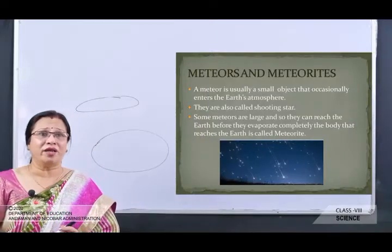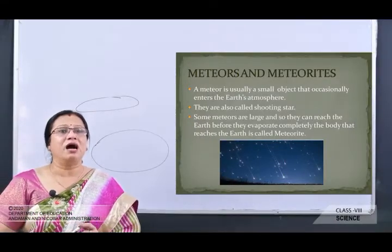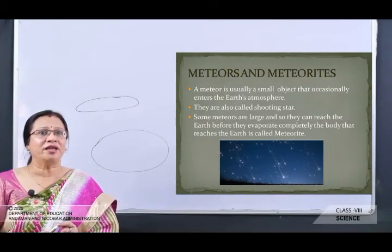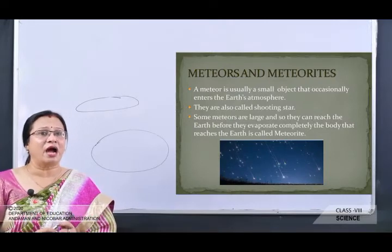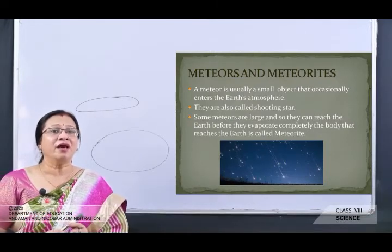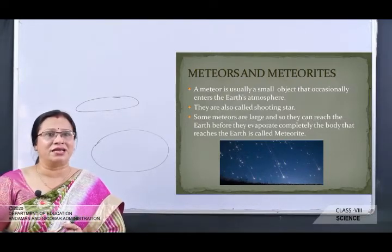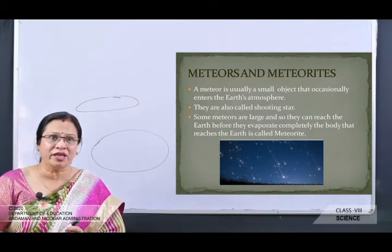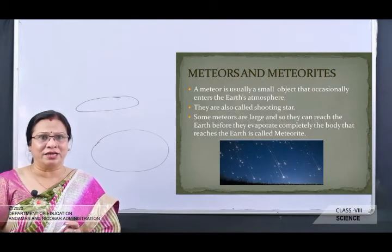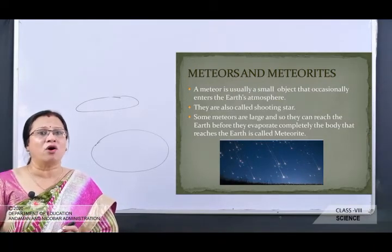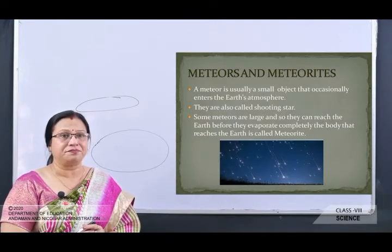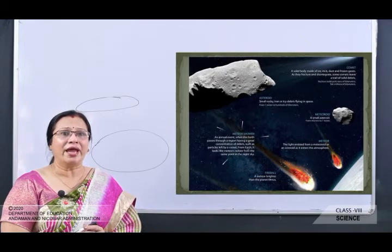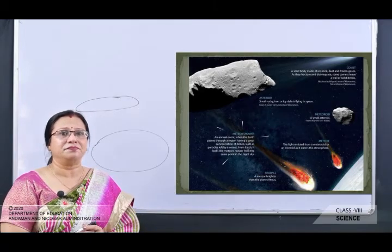Meteors are also called shooting stars. Some meteors are large and can reach the earth before they evaporate completely. The body that reaches the earth is called a meteoroid or meteorite. Meteors help scientists investigate the nature of the material from which the solar system was formed. This picture shows meteors and meteoroids.